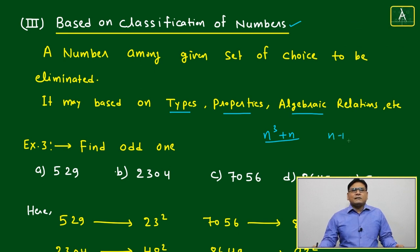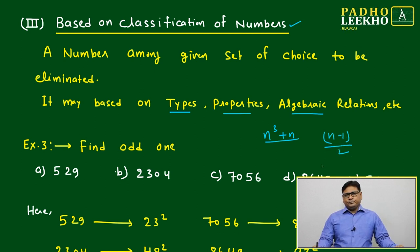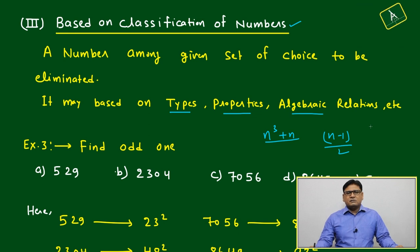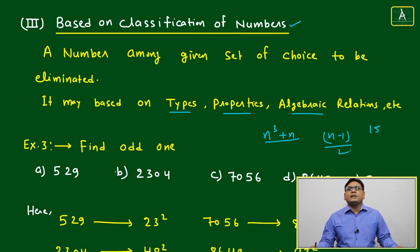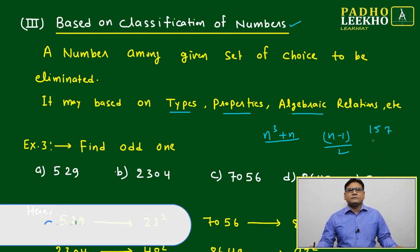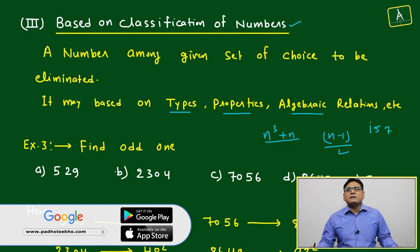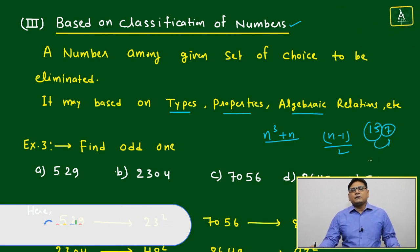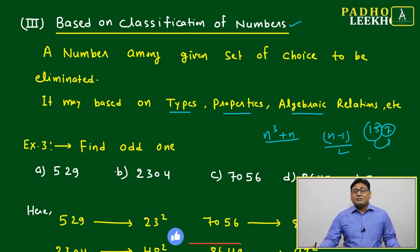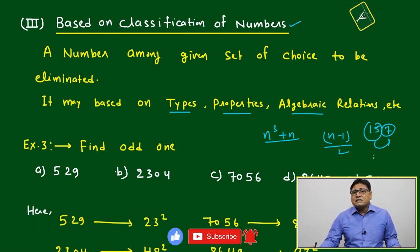But I can make one another relation, n minus 1 by 2. Means one number, certain number is there, 15. Next number is coming n minus 1 by 2, means 14 by 2, it will be 7. So 157, 157 is related like this. 15 is related to 7 by n minus 1 by 2.